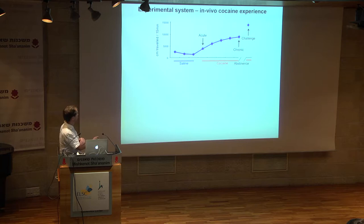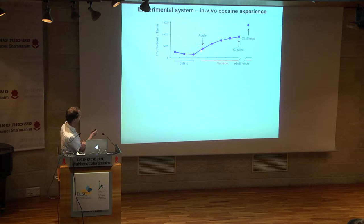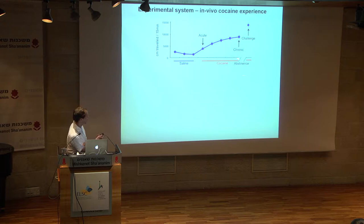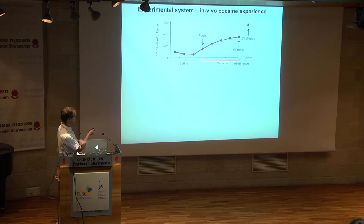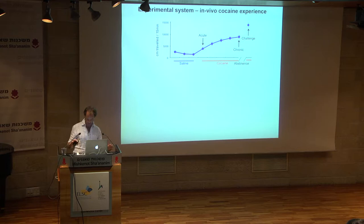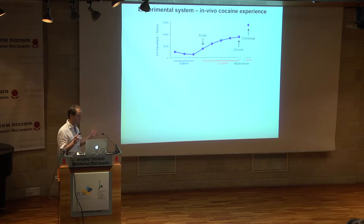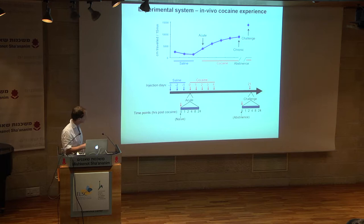When we look at the cocaine experience in the lab, we take the simplest model possible: we take a mouse, habituate it to saline injections in a novel environment, then measure its locomotor activity following an acute exposure to cocaine. Daily injections cause a gradual increase in locomotor activity. We can then put the mouse back in its home cage, come back a few weeks later, and test its memory of the drug experience. The locomotor activity is elevated further, demonstrating an incubation of the response.